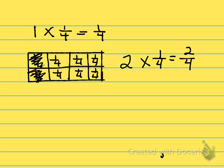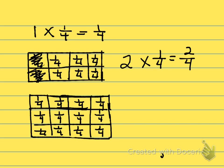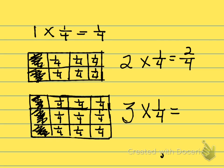Let's see if we can do this again with another model. This time, boys and girls, I've drawn a model. I have three bars, or three one-wholes, and each one of the wholes is separated into four equal pieces. So this time I'm going to talk about three times one-fourth. I'm going to cover one-fourth out of each bar: one-fourth, one-fourth, one-fourth. So three times one-fourth equals how many fourths, boys and girls? Three-fourths.